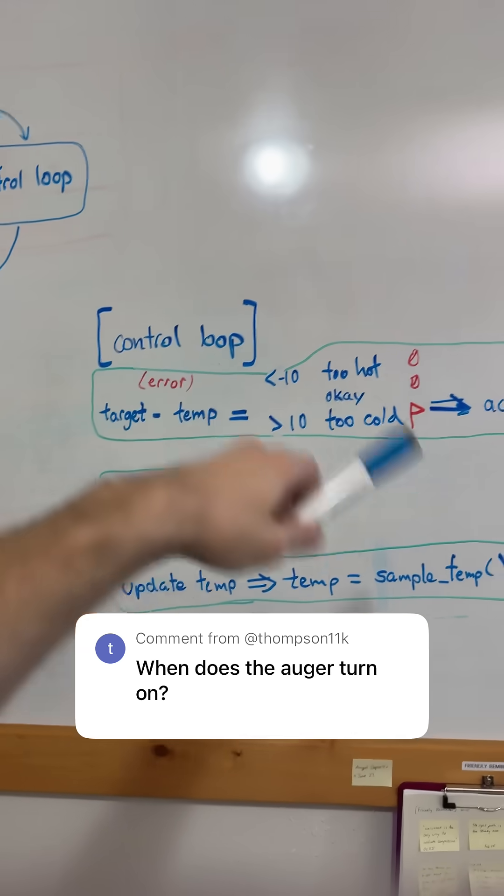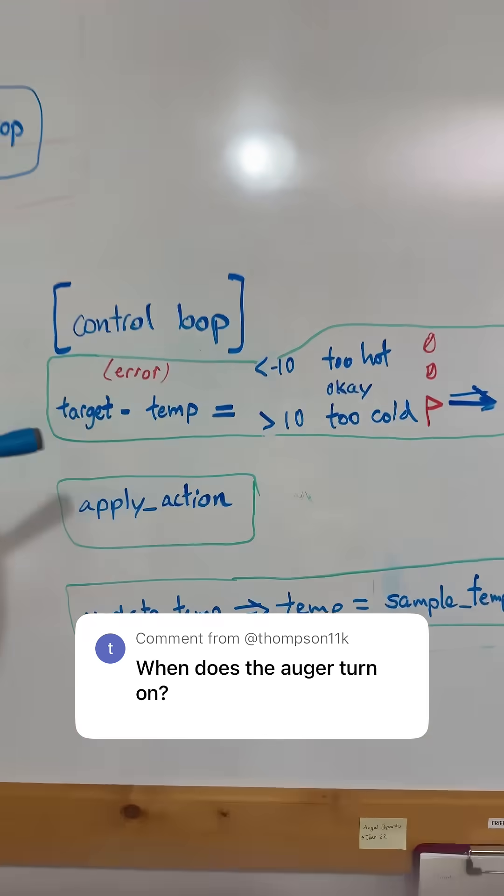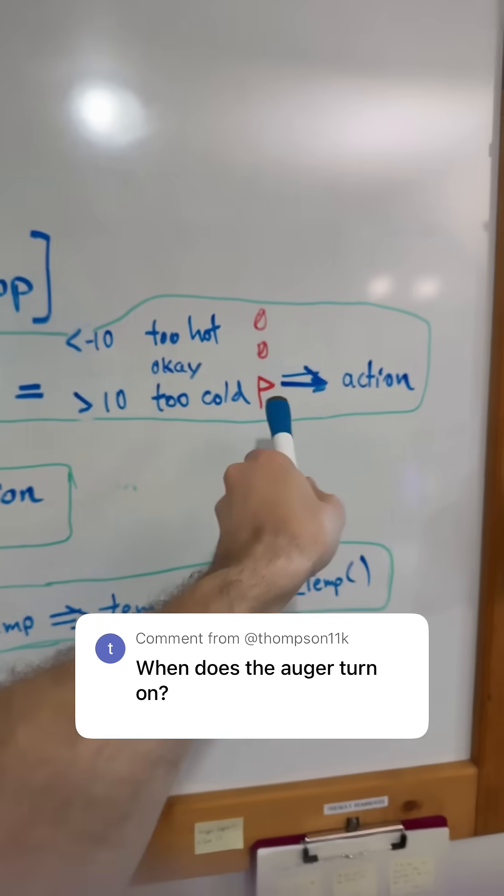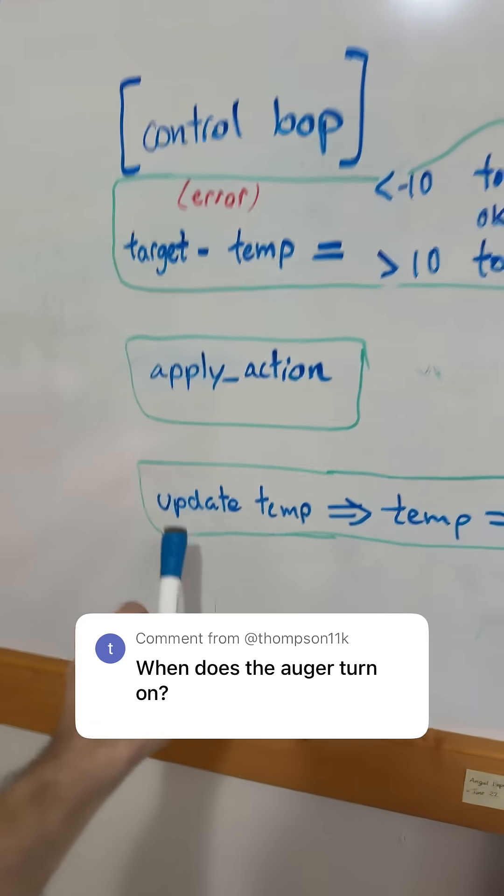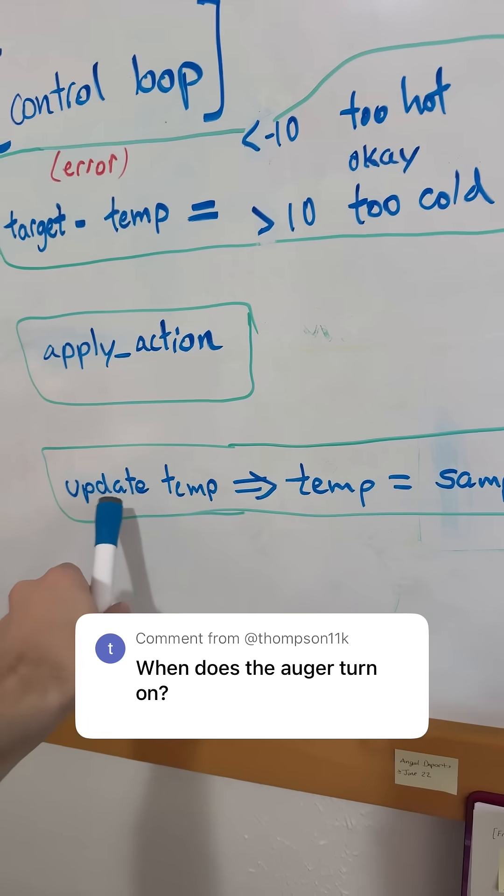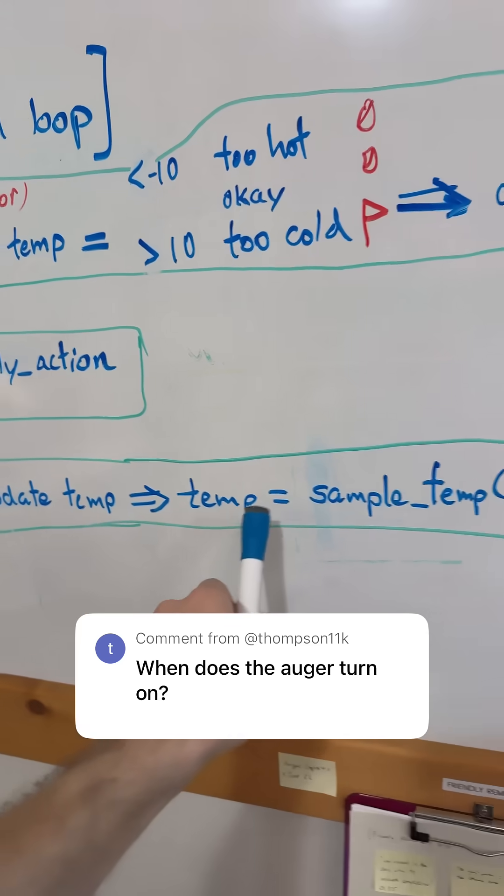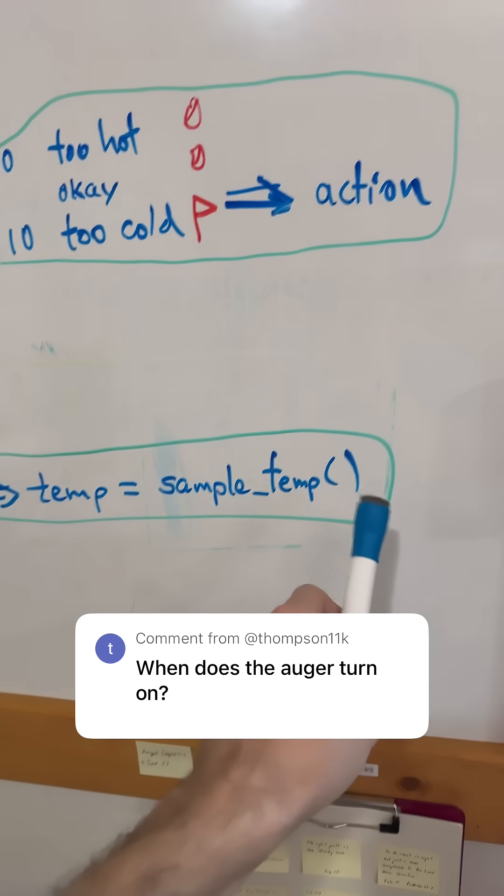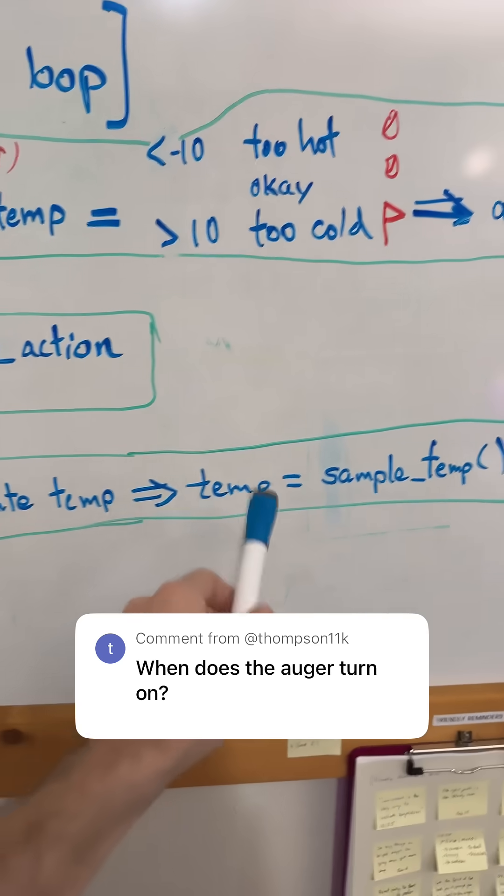Then we update the whole control loop. We complete this loop by taking the next step, which is apply the action and set the flag on. And then we take one more sample for the next temperature in the measurement, which is a function run. Then the temperature is set to a new sample temperature by running the sample temperature function and applying that value into here.